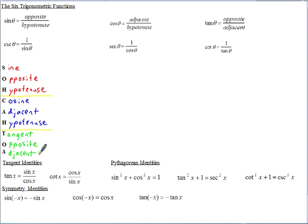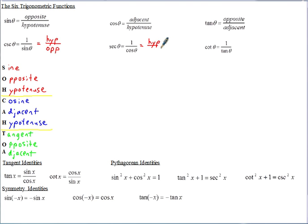The other three trig functions are just the reciprocals of the first three. Cosecant is one over sine, so cosecant theta equals one over sine theta — meaning in the triangle it's the hypotenuse over the opposite. Similarly, secant is the reciprocal of cosine, so secant is the hypotenuse over the adjacent. And finally, cotangent is the reciprocal of tangent, so cotangent is the adjacent over the opposite.